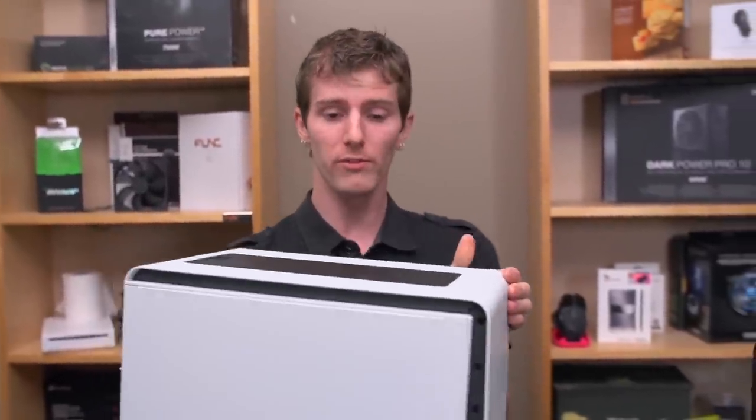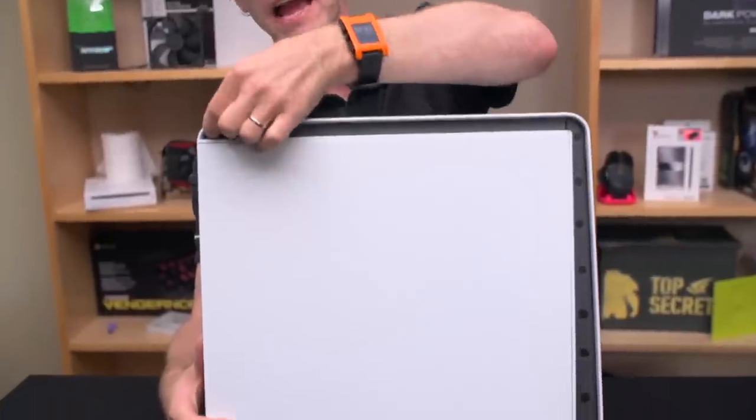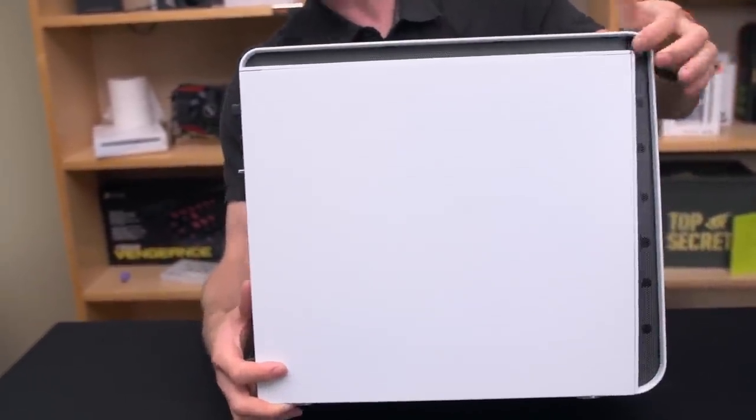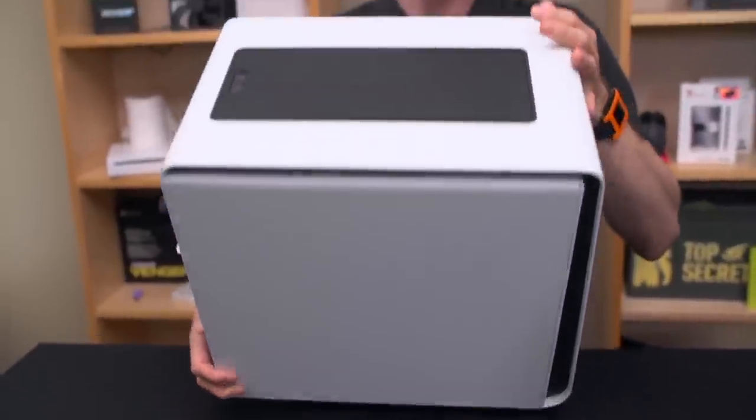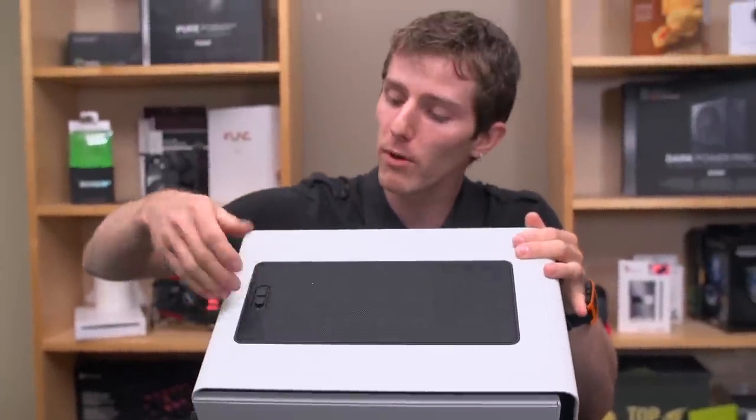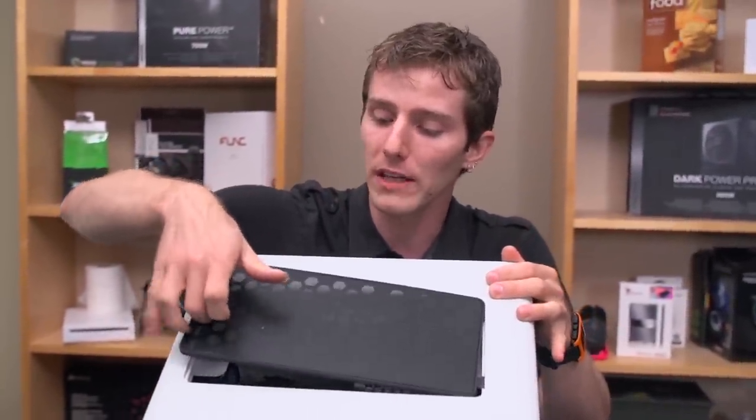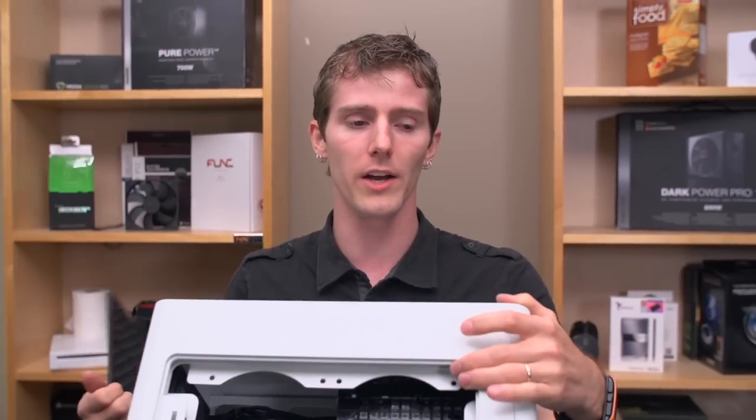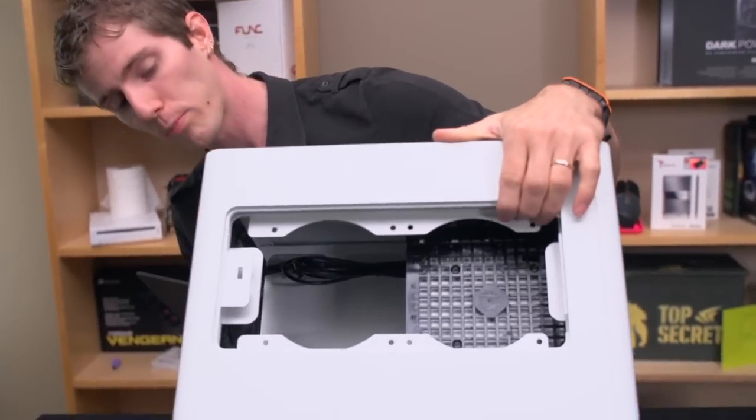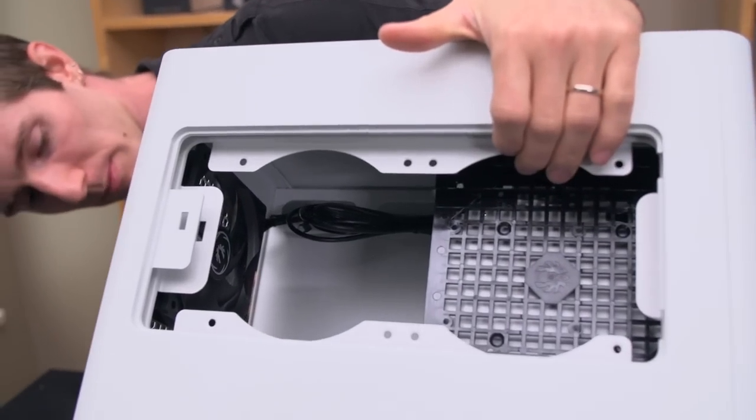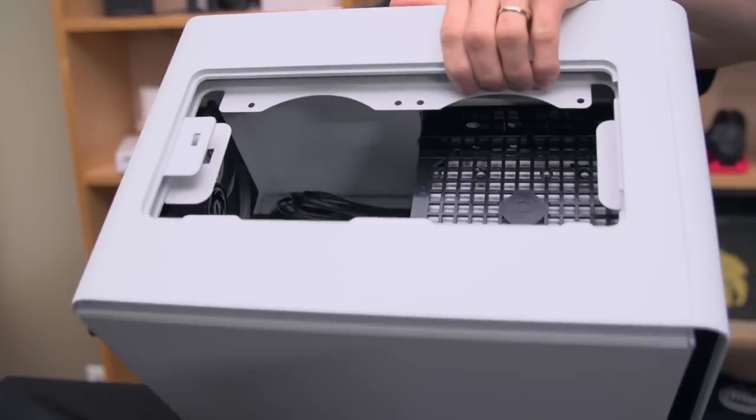Neither of them are windowed variants. You've got the same kinds of accents up here on the top that you've got on the side with little grills. Then on the top of the case you've got that same removable fan grill that we saw on the Prodigy that gives you access to radiator support. So you can chuck a dual 120mm radiator in there no problem.